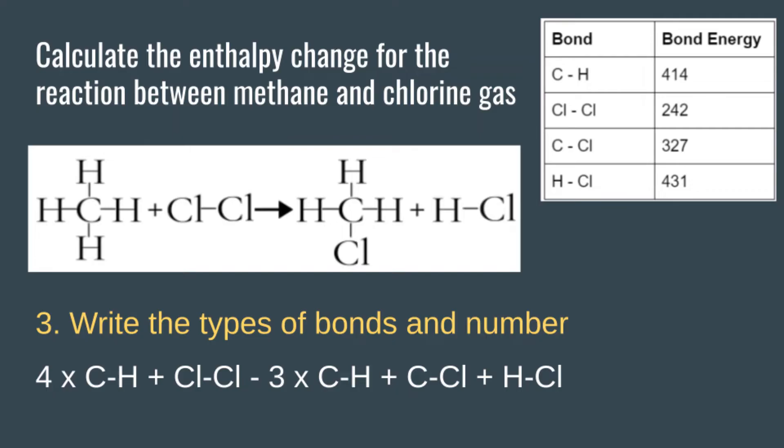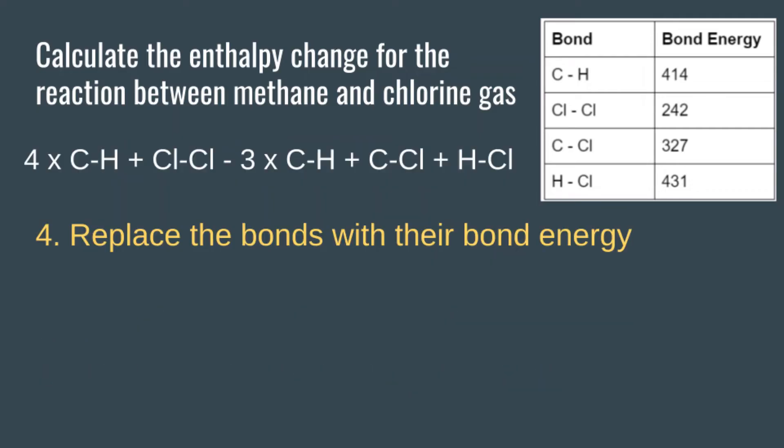You can just write the bonds broken and bonds made, so bonds broken minus bonds made, but it is much easier to make a mistake that way. The best way is to include all reactant bonds and all product bonds in your equation.